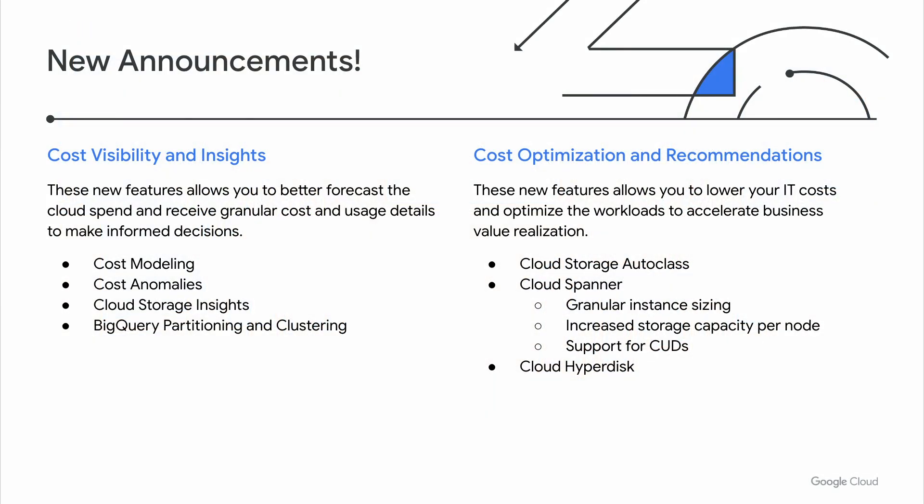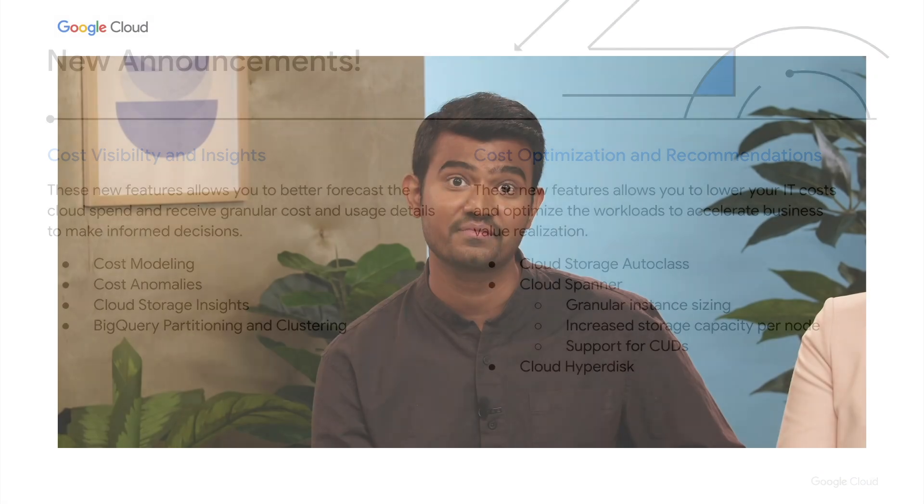Finally, in this category, we are excited to introduce Google Cloud Hyperdisk, the next generation of block storage. Cloud Hyperdisk decouples the block storage performance from the VM so you can tune your storage performance to your workload needs to achieve higher IOPS and throughput performance independent of virtual machines. Cloud Hyperdisk can deliver up to 60% better total cost of ownership than the previous generations of persistent disks.